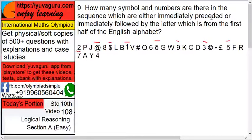Next, how many symbols and numbers are there in the sequence which are either immediately preceded by or immediately followed by a letter which is from the first half of the English alphabet?